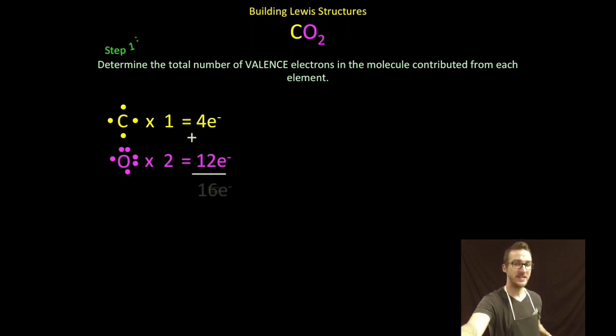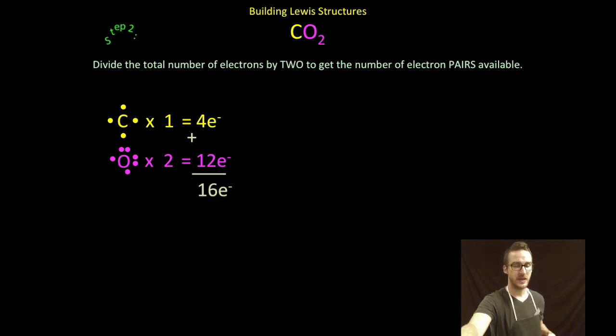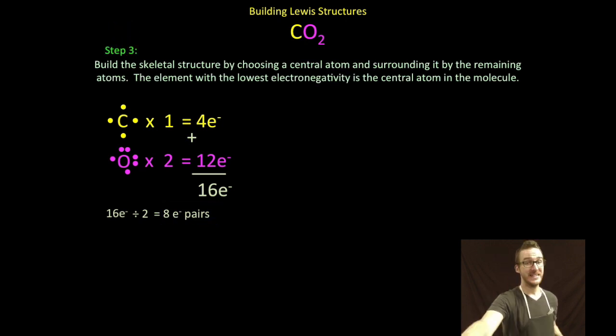In total for the molecule I simply add my valence electrons coming from carbon and my valence electrons coming from oxygen - sixteen total valence electrons. Step 2: divide my total number of electrons by two to get the number of electron pairs available. In this case, eight pairs of valence electrons available.